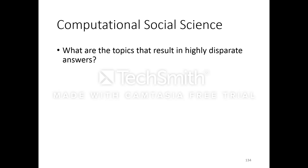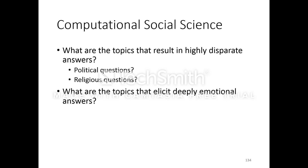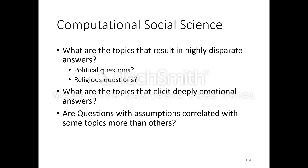There is also the emerging field of computational social science — there are even conferences dedicated to this area. You could ask many computational social science questions on QA data: What topics result in highly disparate answers — are those political or religious questions? What topics elicit deeply emotional answers? Are questions with certain assumptions correlated with some topics more than others — for example, do people in tech communities assume everyone is a geek and start with jargon?